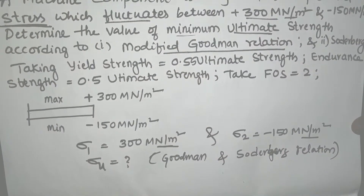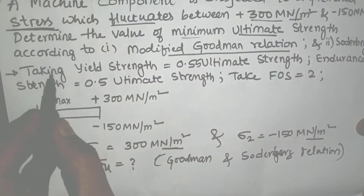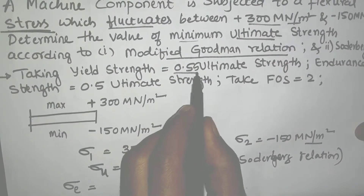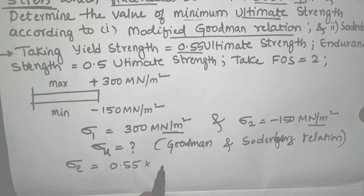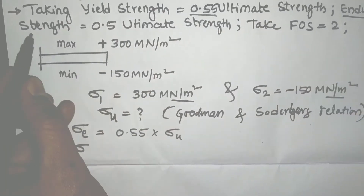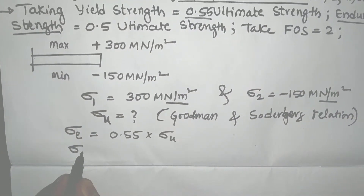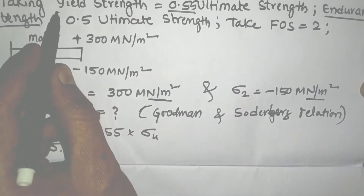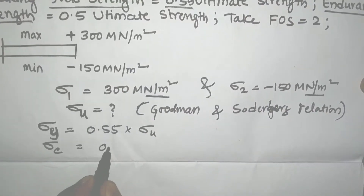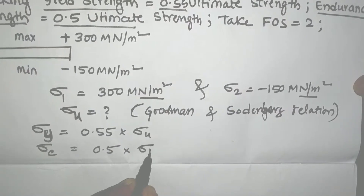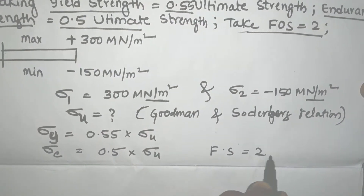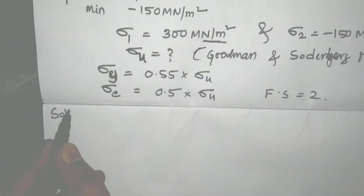The value of ultimate strength will differ for Goodman and Soderberg. Some conditions are given: yield strength Sigma_Y is equal to 0.55 times ultimate strength, and endurance strength Sigma_E is equal to 0.5 times ultimate strength. The factor of safety (FOS) is given as 2.